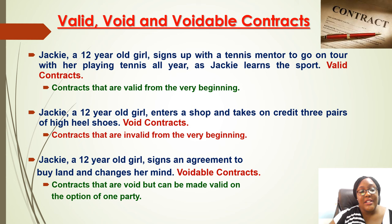A void contract, on the other hand, is one that is illegal from the very beginning — the law does not recognize it. For example, Jackie is 12 years old and she enters a shop and takes things on credit. That is void because she is a minor and cannot contract. A void contract is one that is wrong, non-existing, and non-recognized from the beginning — it simply doesn't exist and is not considered in law.